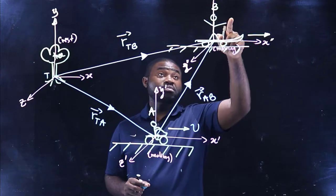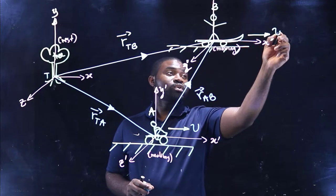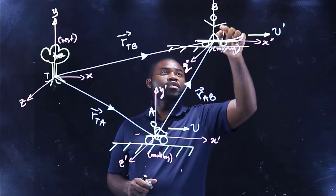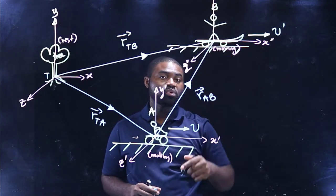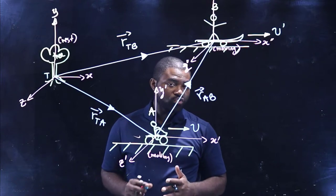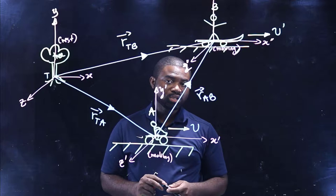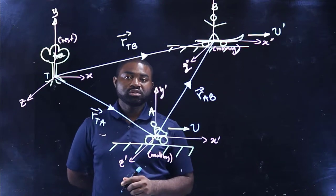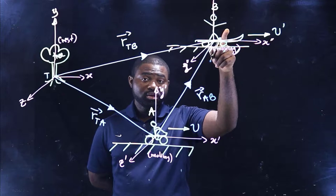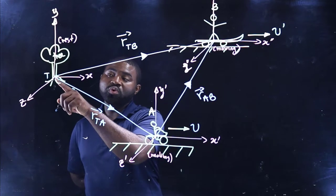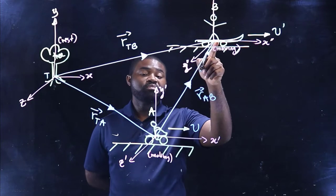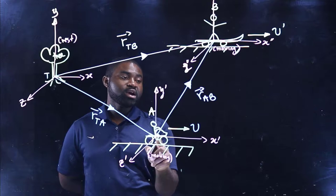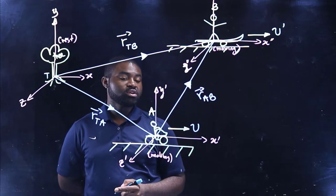You have observer B on a skateboard moving forward with velocity V. The frame of reference of B is a set of coordinate axes attached to his skateboard, so he is at rest with respect to his coordinate system. Now, R-T-B is the position vector of the tree with respect to observer B — a vector from the origin of B to the origin of T. R-T-A is the position vector of T with respect to A, and R-A-B is the position vector of A with respect to B.